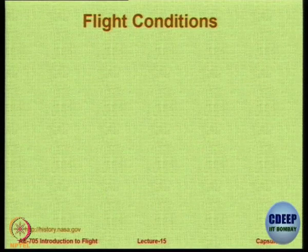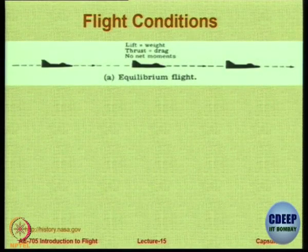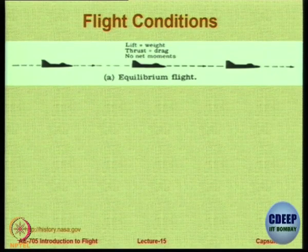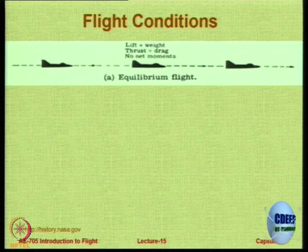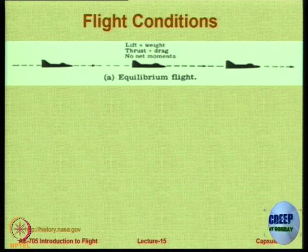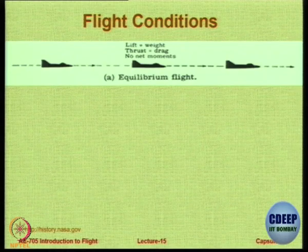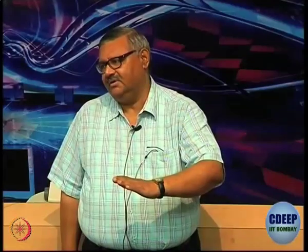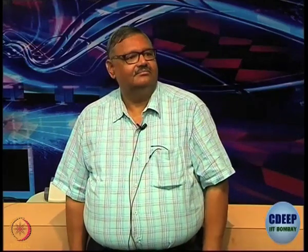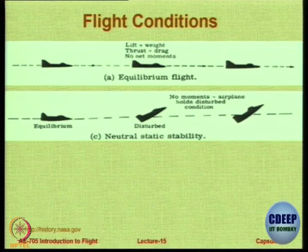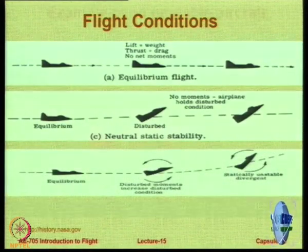We are concerned about flight, not balls on surfaces. In equilibrium flight, the aircraft is at some angle of attack — thrust equals drag, lift equals weight in level flight, no net movement. You could incline it to make it a steady climbing flight, again in equilibrium with moments in balance, although lift is less than weight. A neutral aircraft remains disturbed when disturbed, and an unstable aircraft departs further.